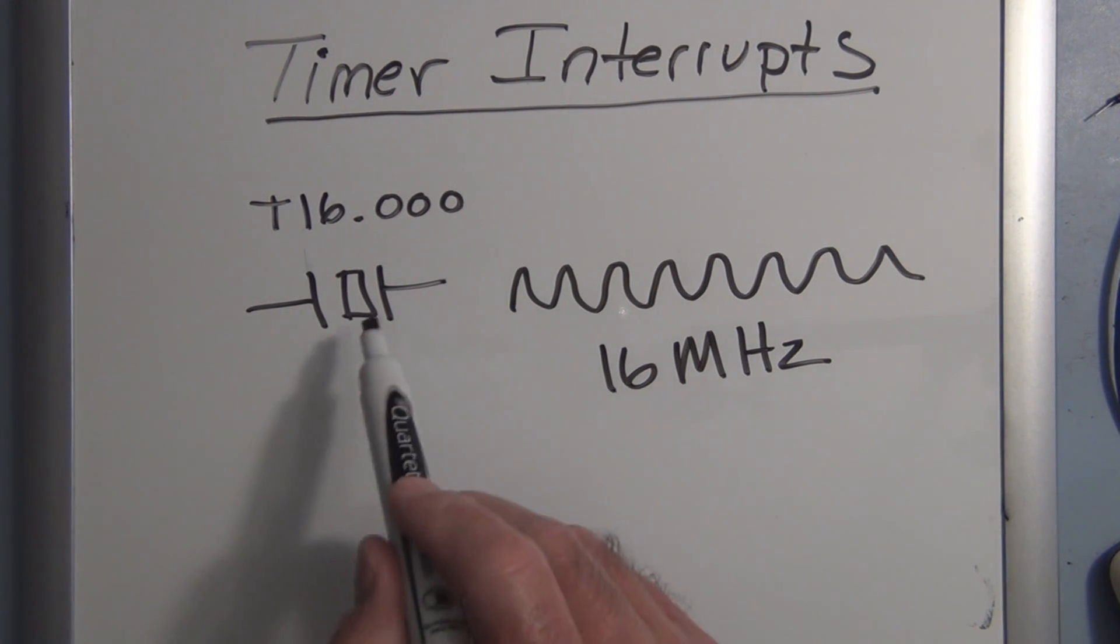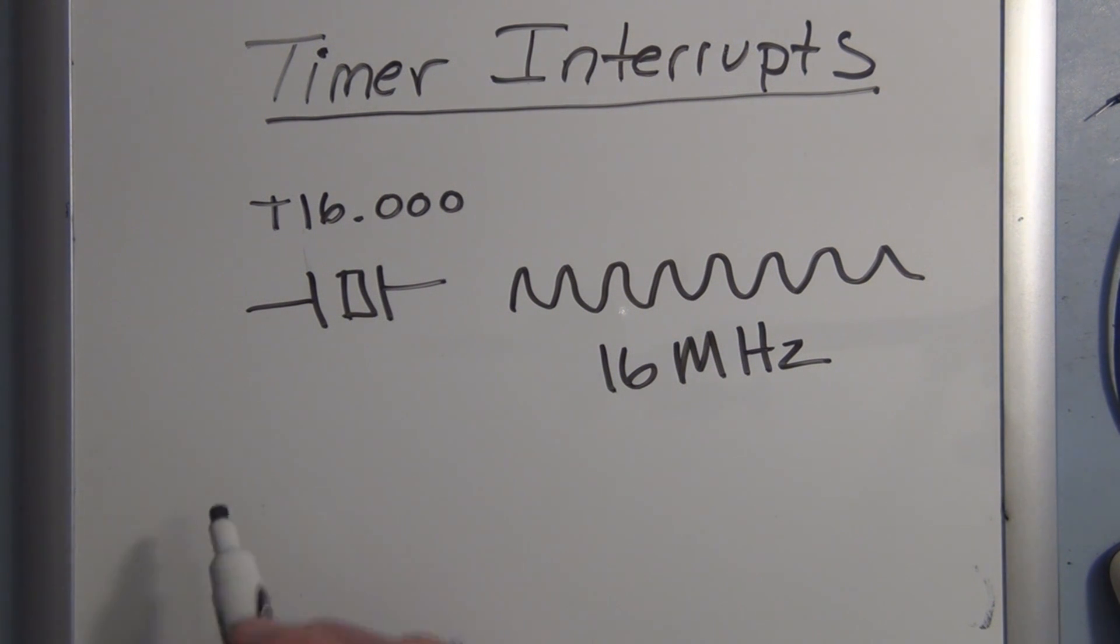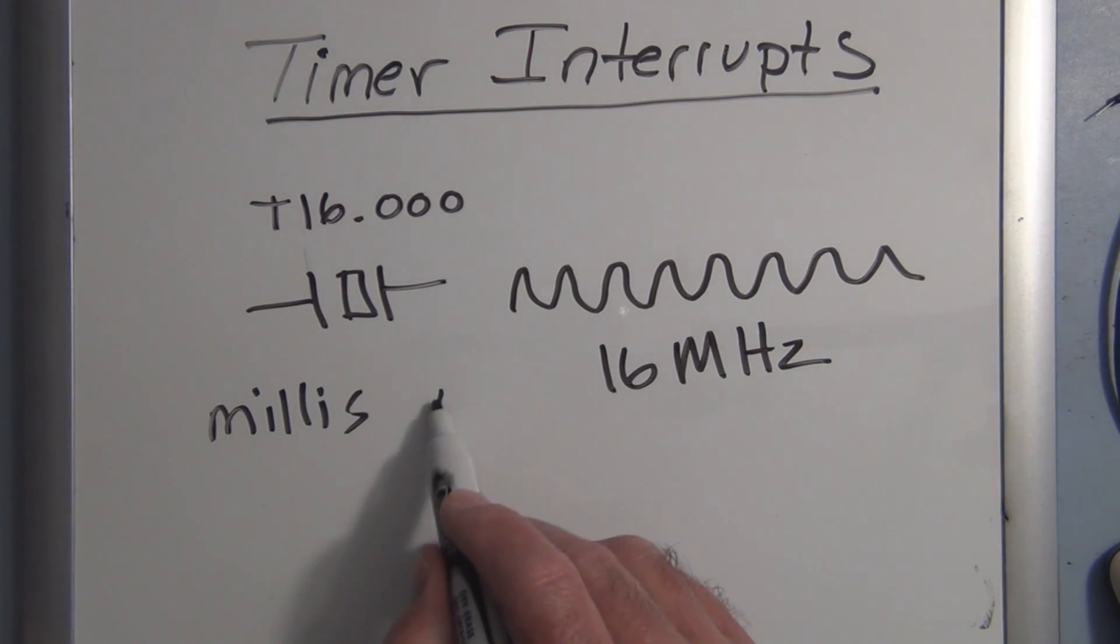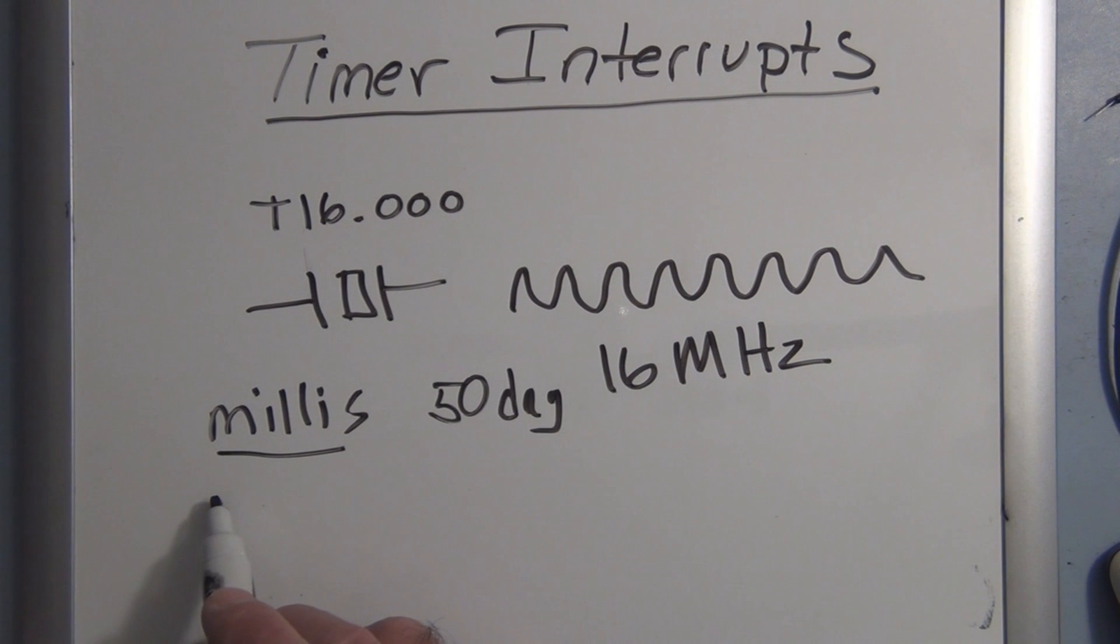So you have this crystal T16000, and as soon as you turn on the Arduino it starts to oscillate, oscillating at 16 megahertz. All the timing that occurs or is made use of on the Arduino is based on this crystal. We've used the millisecond function, and that keeps track of this crystal. As soon as you turn on the Arduino, the millisecond keeps track of the time that's passing. It starts to count and can keep track of up to 50 days with this function, and then it resets.